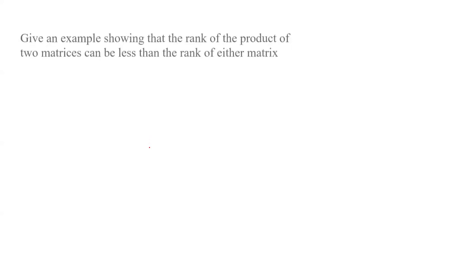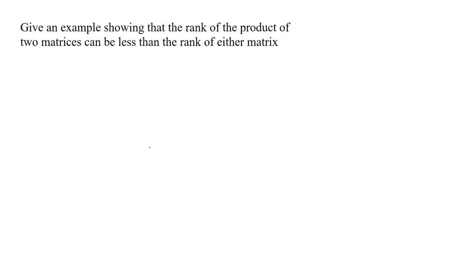The next question: give an example showing that the rank of the product of two matrices can be less than the rank of either matrix. The first matrix can be [1, 0; 0, 0] with rank 1, because it has only one non-zero row.